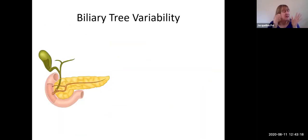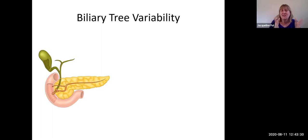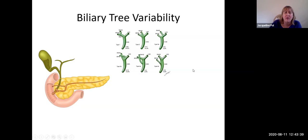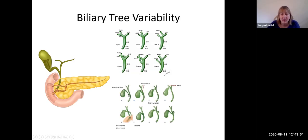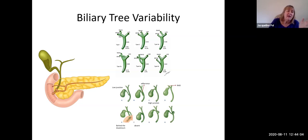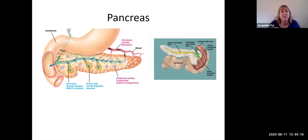This is the most common arrangement, but just as everyone's nose has similar structure but looks different, there is a lot of variability in the biliary tree. The intrahepatic bile ducts can attach differently, sometimes giving three main bile ducts exiting the liver. Where the gallbladder and cystic duct attach can also vary, creating challenges for surgeons. In fact, the textbook arrangement occurs in less than 50% of people, though it is the most common.